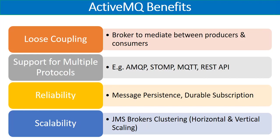ActiveMQ also supports scalability options — both vertical and horizontal. Horizontal scaling means clustering, where you can have multiple JMS brokers. Vertical scaling means you can increase the CPU, memory, and other resources of your existing broker or set of brokers, and fine-tune them to perform well without necessarily adding more brokers to the cluster. These are some of the major benefits associated with ActiveMQ.